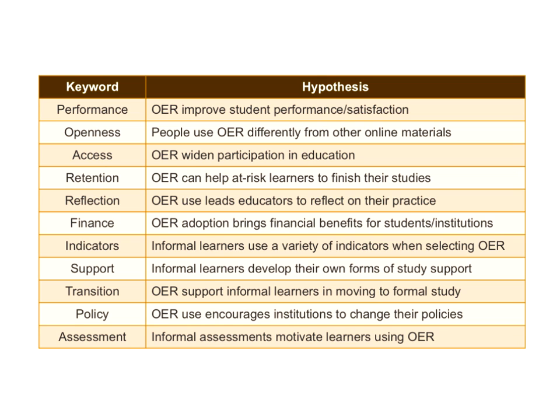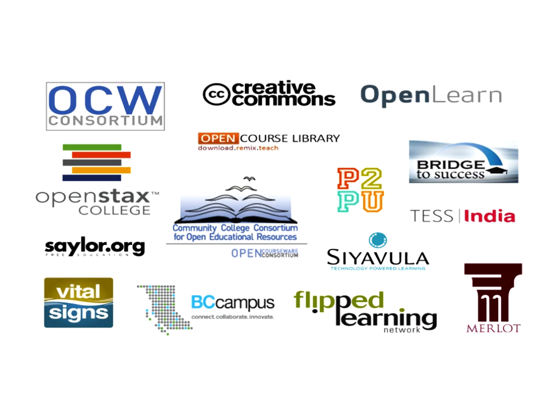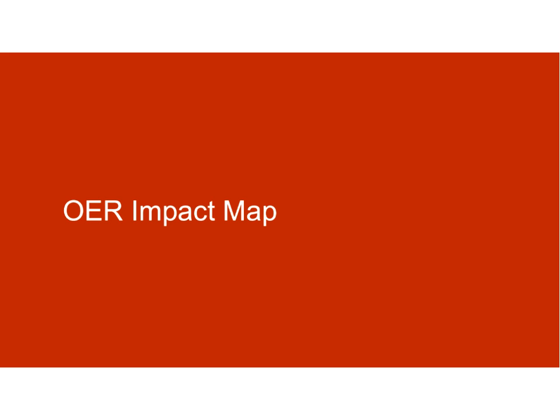Here's an overview of our hypotheses. The first two relating to performance and openness are key to all the work that we do with our collaborators. Here's our collaboration model, and here are some of the collaborators we've been working with. We started out with eight original collaborations and have since begun to work with other organizations such as Siyavula and BC Campus.